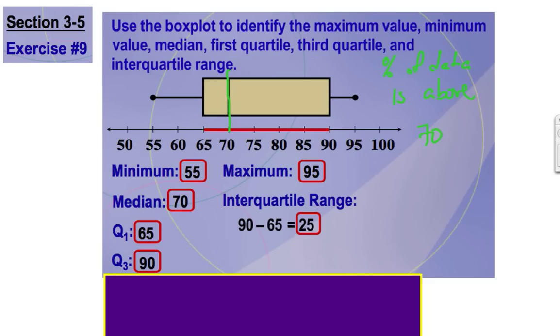Okay, well, the 70 is at the median, so there's 25% there, and there's 25% there. So that means that 50% of the data can be found above 70.